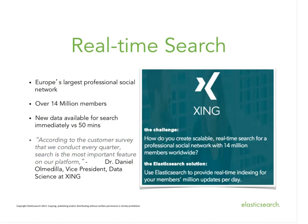One company using both Elasticsearch and Hortonworks is Xing — basically the LinkedIn of Europe — with over 14 million members who use the software every day to update profiles, search for people, and find new connections. Data comes in at a very fast, consistent rate. What used to take about 50 minutes when someone added an update now takes milliseconds — that's one of the key advantages of combining Elasticsearch with Hadoop.